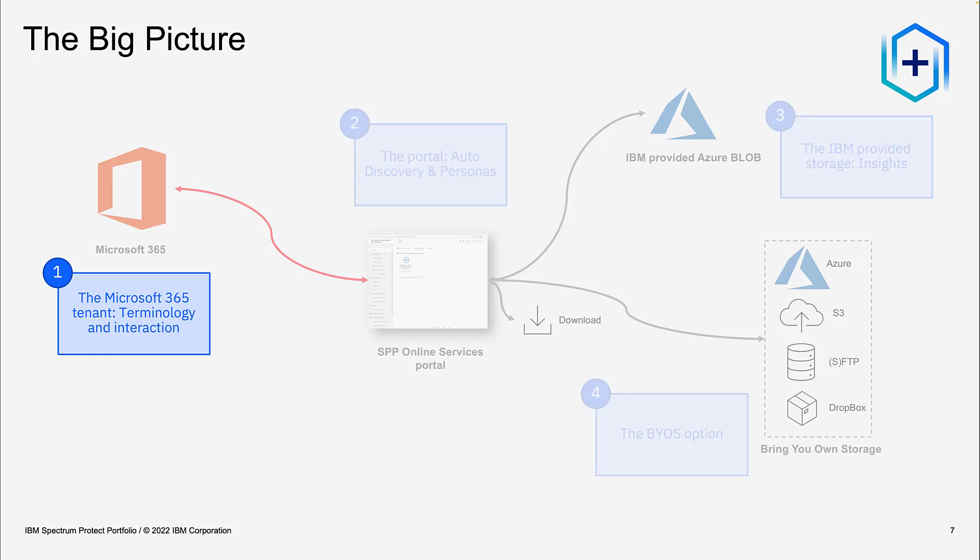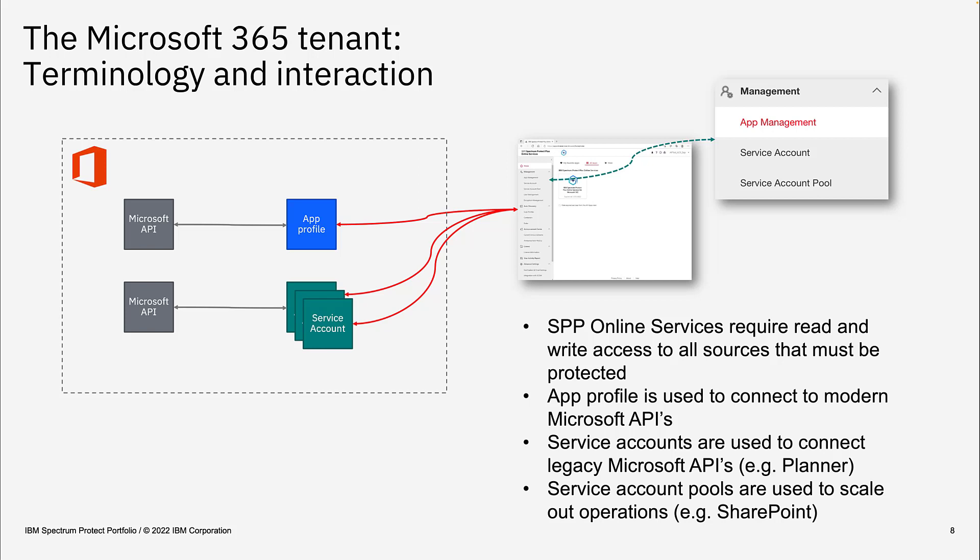The SPP Online Service is used to back up and recover Microsoft data. That means it needs access to read and write the data. Microsoft provides two different sets of APIs. The more modern and recommended way is via an app profile, which can connect to all the modern APIs and is used for most operations.